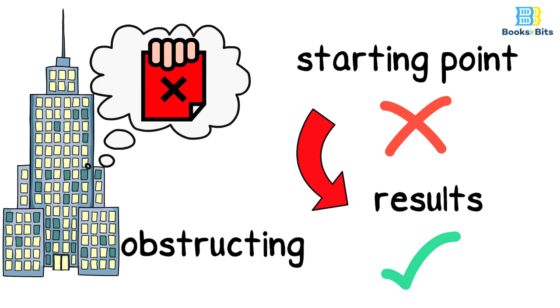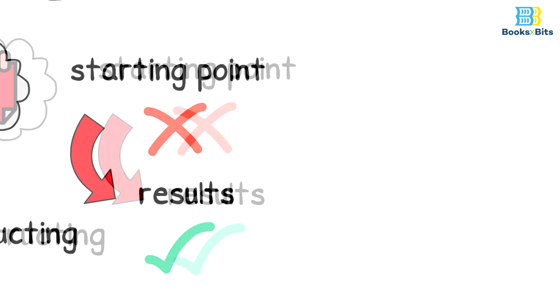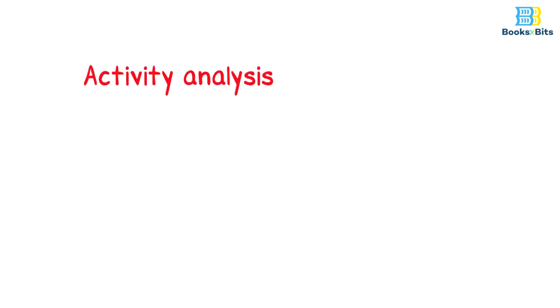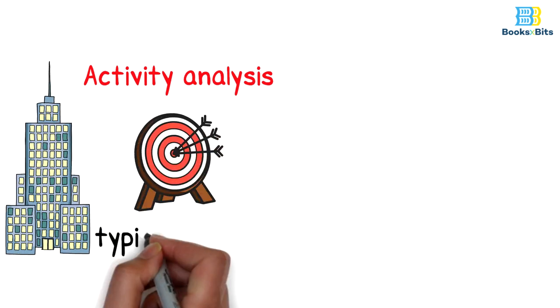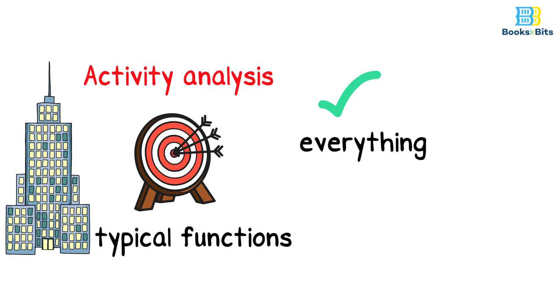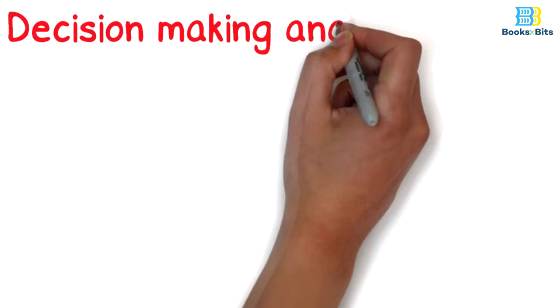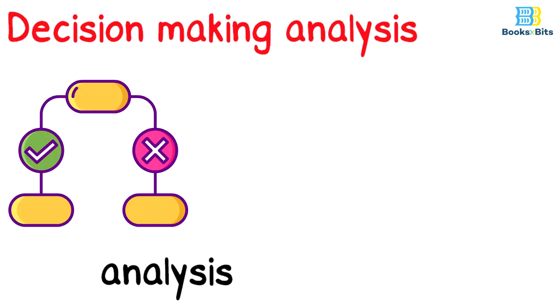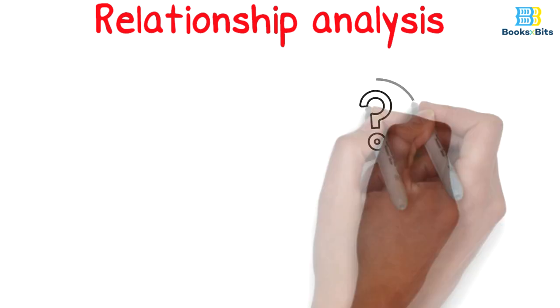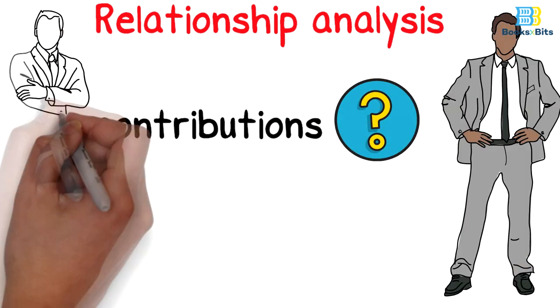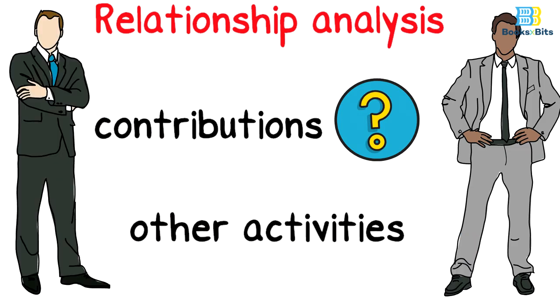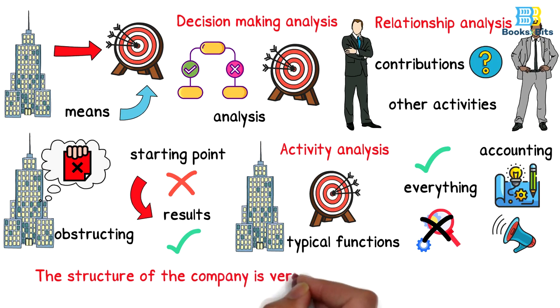There are three ways to determine the type of structure needed to achieve the objectives of a company, which are: activity analysis, decision-making analysis, and relationship analysis. Activity analysis means that the company has specific objectives of typical functions which can be applied to everything without prior analysis, and in this is marketing, engineering, and accounting. Decision-making analysis is the analysis of the decisions necessary to achieve the performance needed to achieve the objectives. Relationship analysis asks: with whom does the manager work? What contributions should he make to the managers responsible for other activities? The structure of the company is very important in achieving its goals.